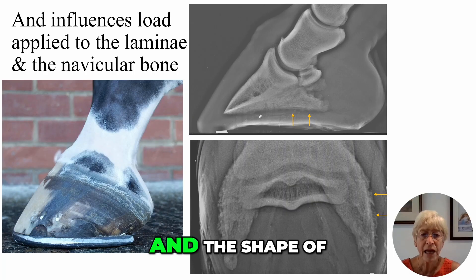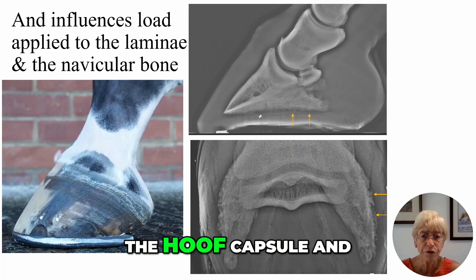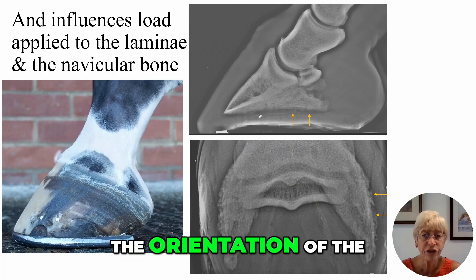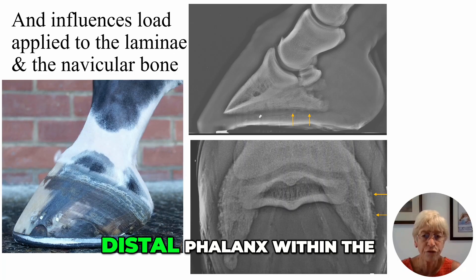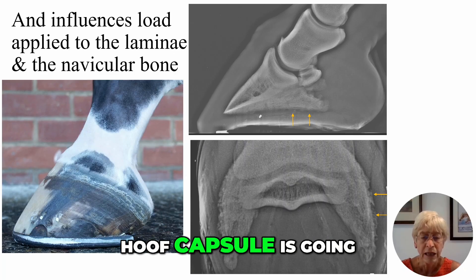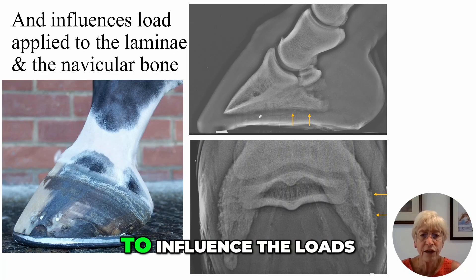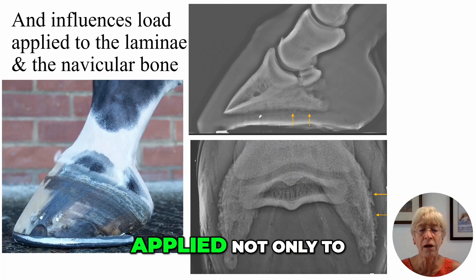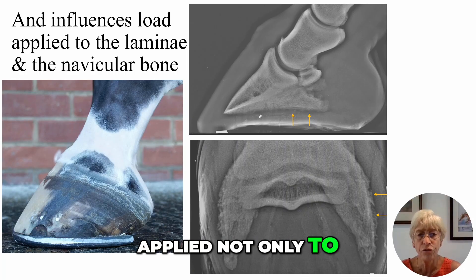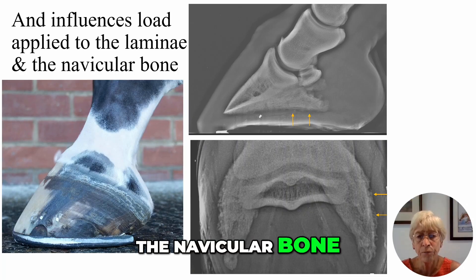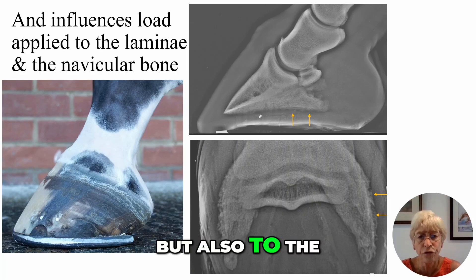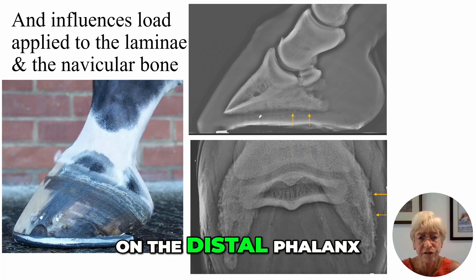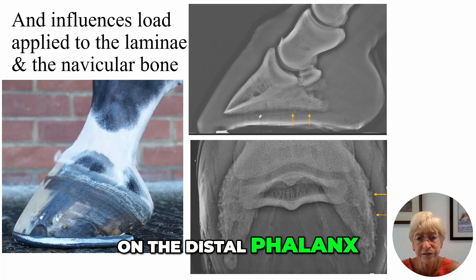The shape of the hoof capsule and the orientation of the distal phalanx within the hoof capsule is going to influence the loads applied not only to the navicular bone but also to the laminae and their attachments on the distal phalanx.